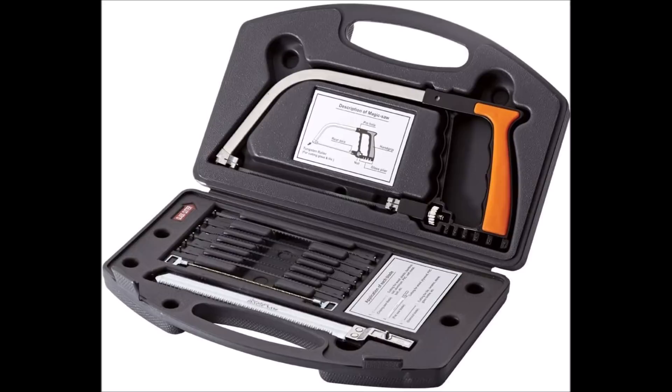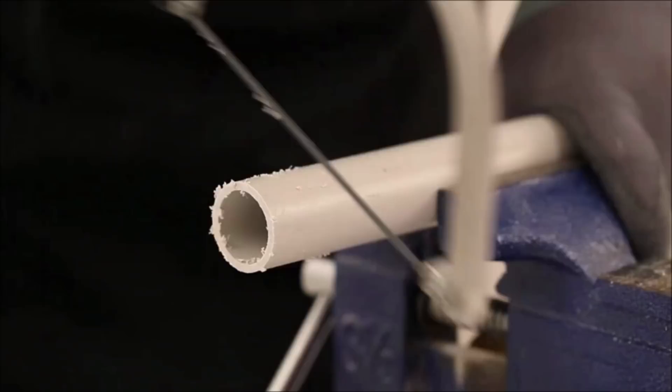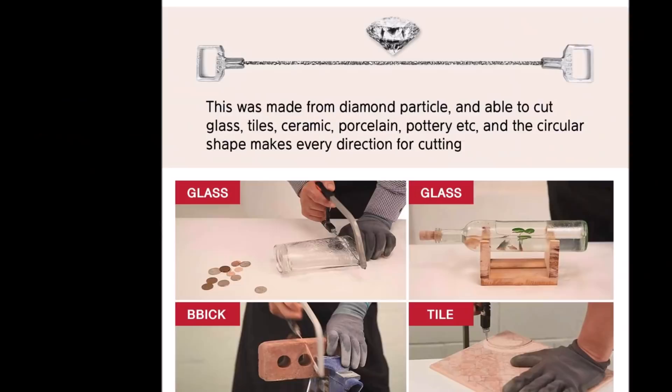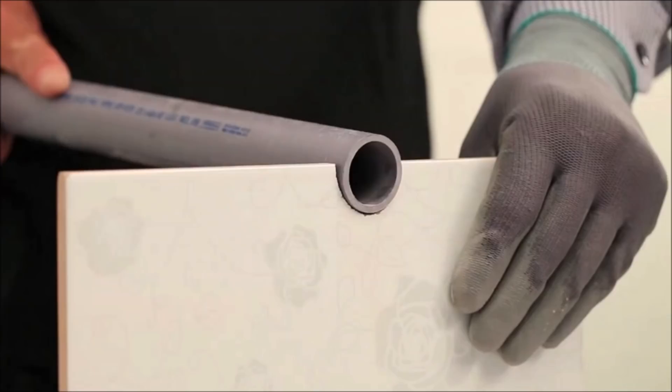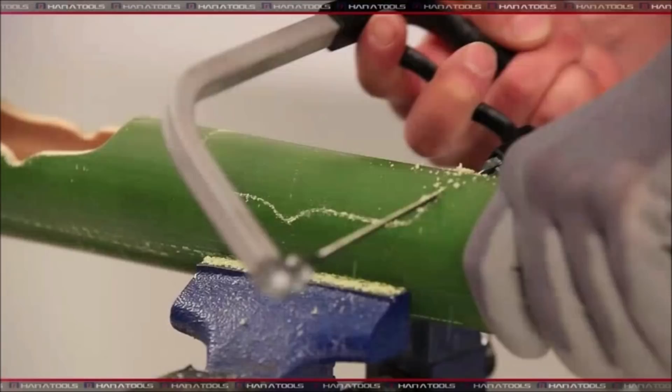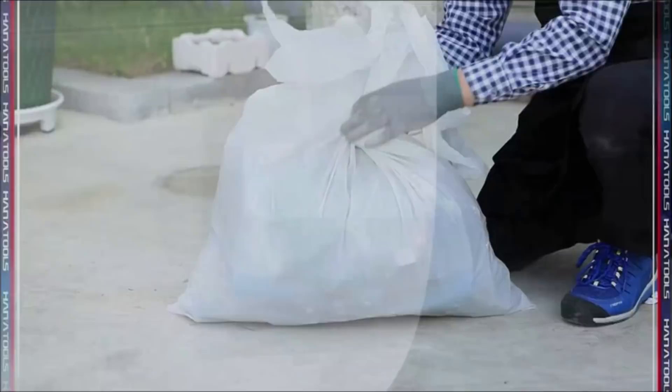15-in-1 magic universal hand socket. Save space and money with this compact size multifunctional tool. Rely on it to replace 15 tools including hacksaw, coping, pruning, bow, folding and jab hand saw, bottle, tile, glass, bolt, steel pipe and plastic pipe cutter, pruning shears. The hand saw magic saw also has built-in several sizes.